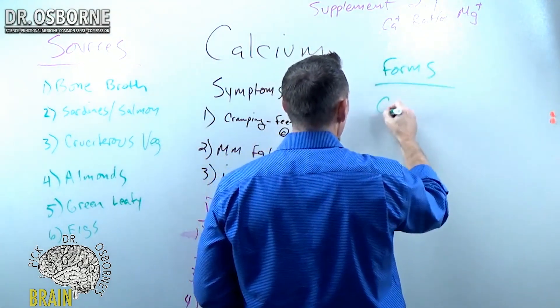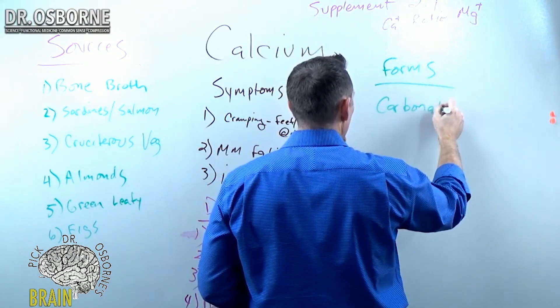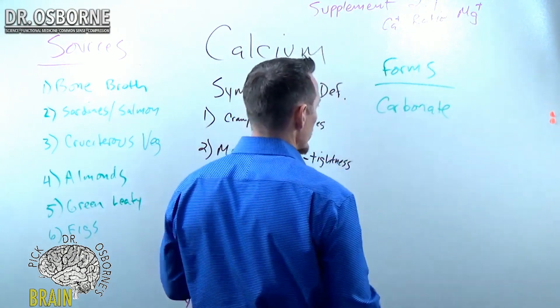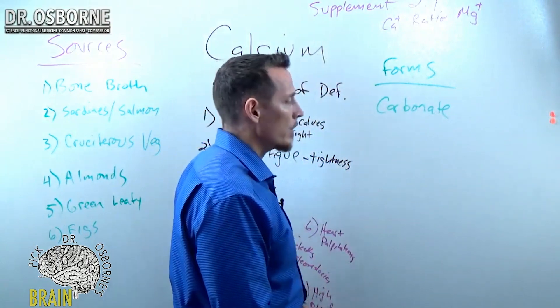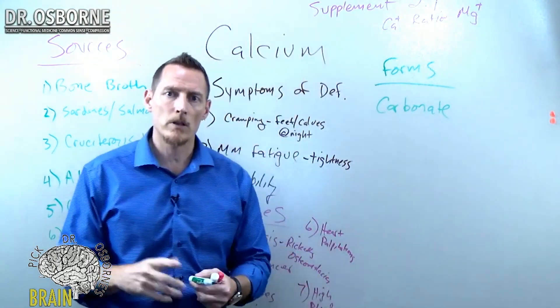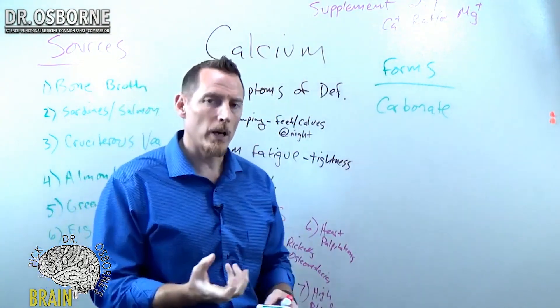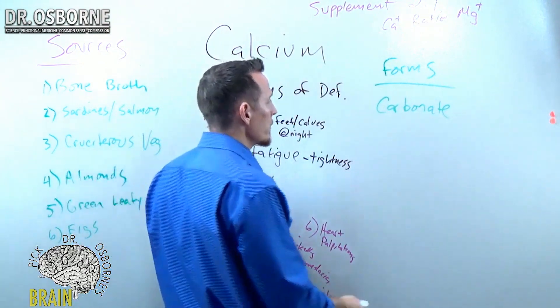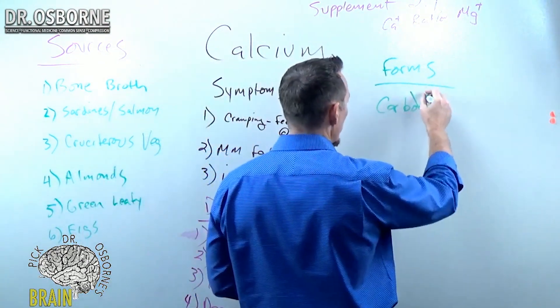You've got carbonate, which is the oyster shell or bone fragment stuff, which is not really any good. Carbonate is really bulky, so it comes in these massive horse pills, but your body doesn't absorb it very well. So this is probably... We say, okay, which one do I not want to use? Carbonate's not a great form.